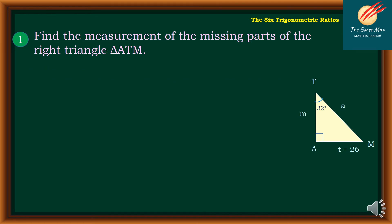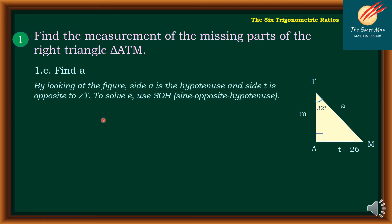Let's continue with our exercise. This time find A, or that is the hypotenuse, or that is the line segment TM. By looking at the figure, side A is the hypotenuse, and side T is the opposite of angle T, which is opposite to angle T.